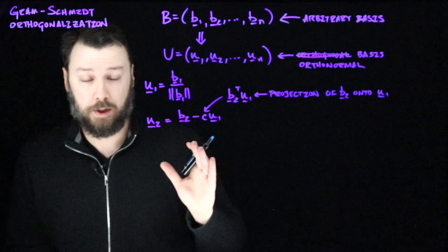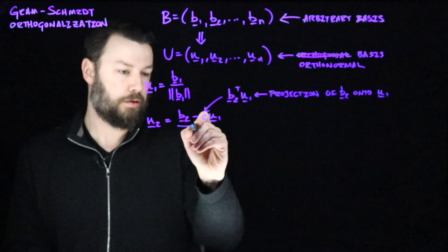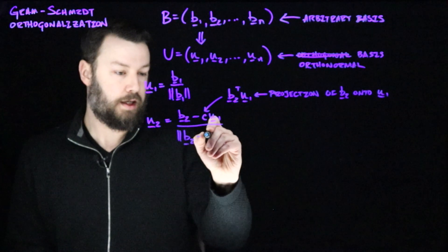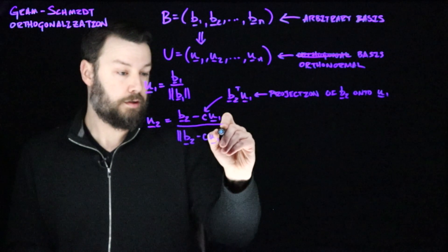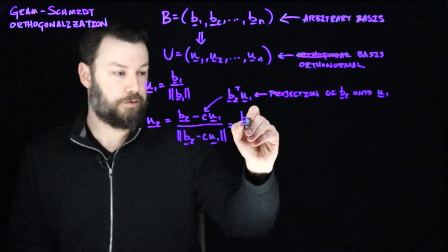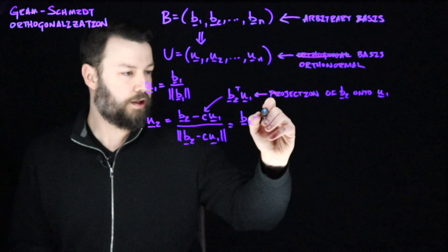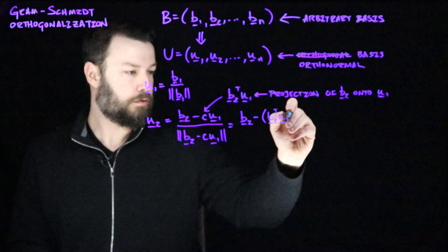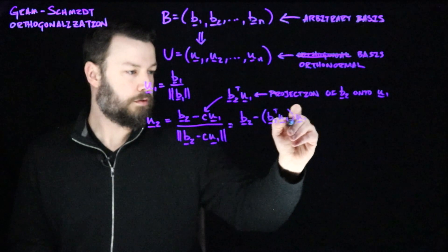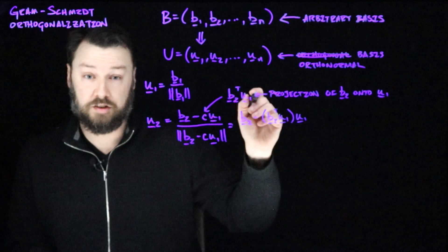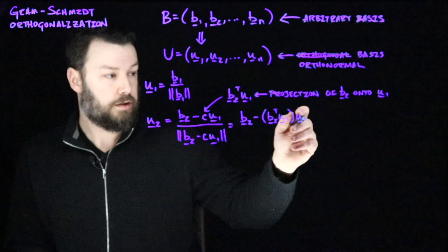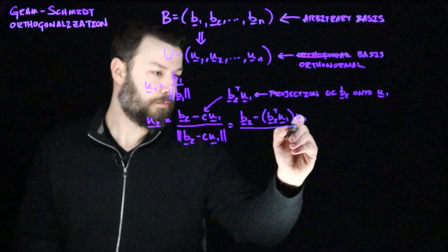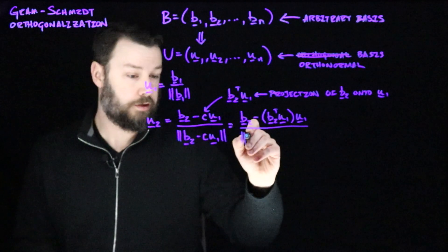And then we're going to divide by the length of this vector. So then we'll divide by b2 minus what I've written here, which is c u1. Substituting in for c, then we're going to wind up with b2 transpose u1, u1. Now, this is a little bit confusing because this inner product produces a scalar, and then that scalar is used to change the length of u1. And then we divide by the norm of the overall vector.